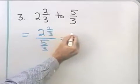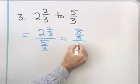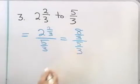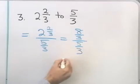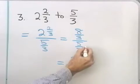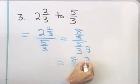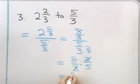3 times 2 is 6, plus 2 is 8. So I have 8 thirds in the numerator divided by 5 thirds in the denominator. Instead of dividing by 5 thirds, I'm going to multiply by its reciprocal. So I have 8 thirds times 3 fifths. The 3s divide out, and I end up with 8 fifths.